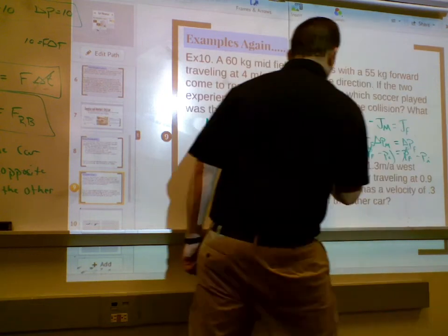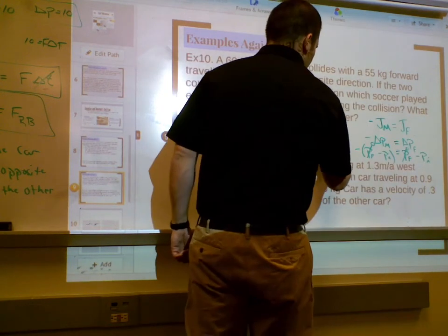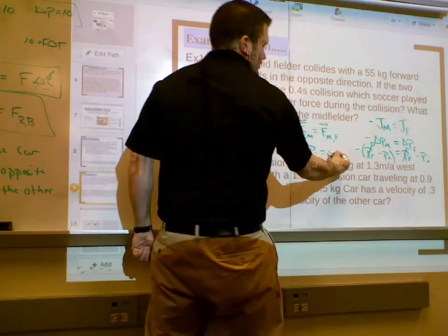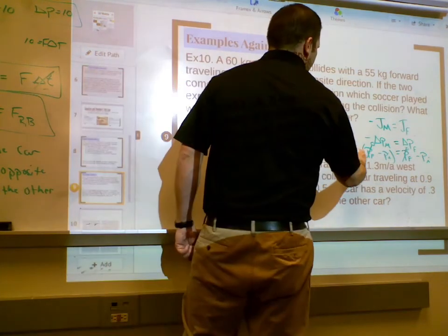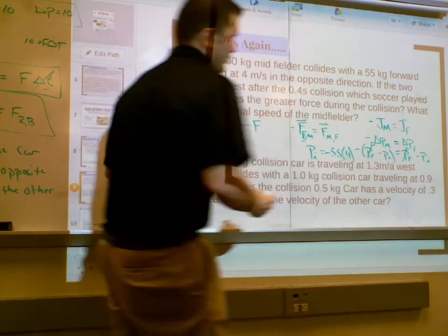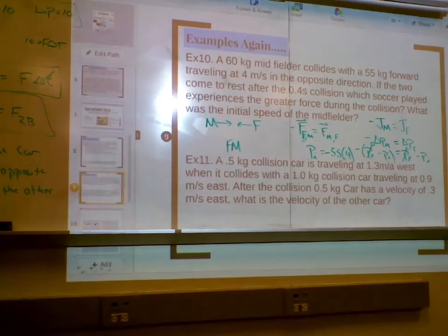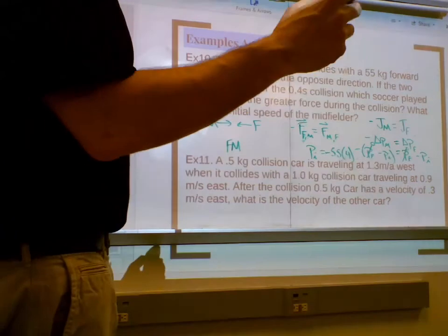Yes. So the midfielder's initial, and I'll write it over here. The initial for the midfielder equals the negative initial momentum for the forward, which is 55 times 4. Does that make sense? Okay. 55 times 4 is?